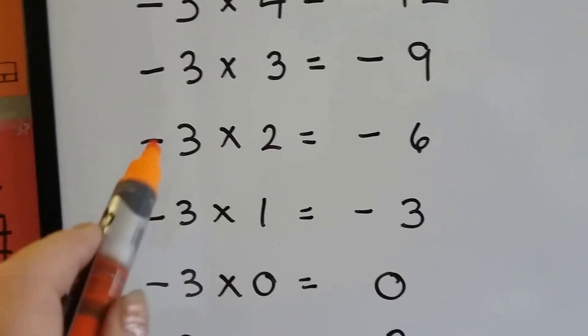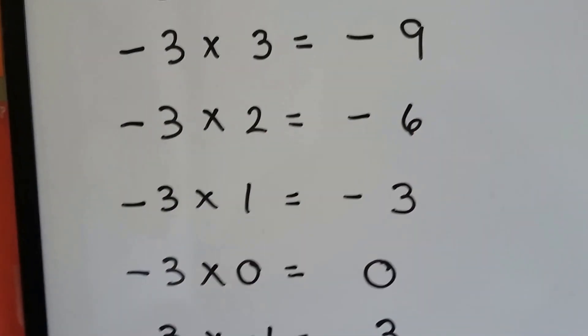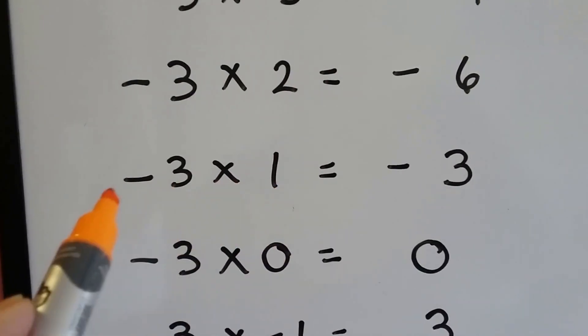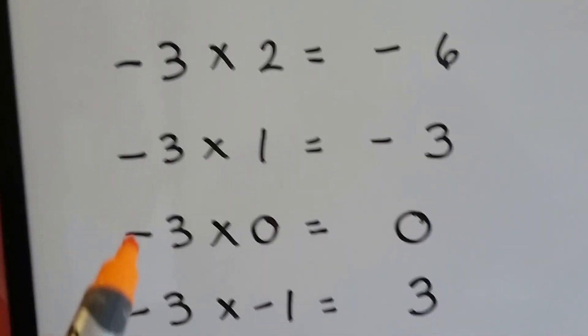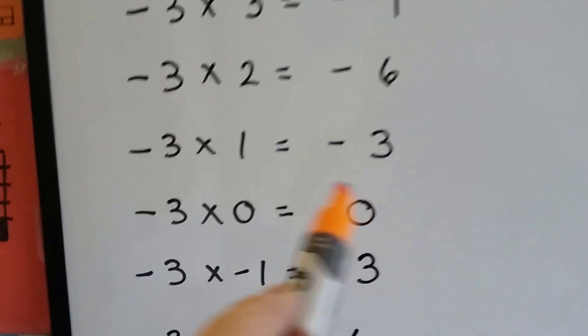When we have negative 3 two times, we have 2 negative 3's. We have a negative 3 plus a negative 3, that's a negative 6. When we have negative 3 one time, we just have 1 negative 3. When we have negative 3 zero times, we have 0.